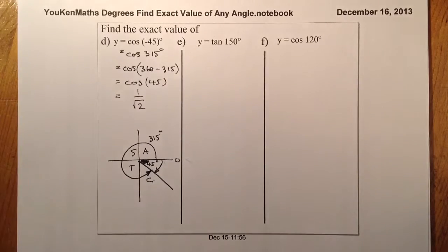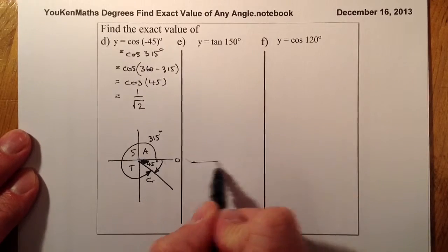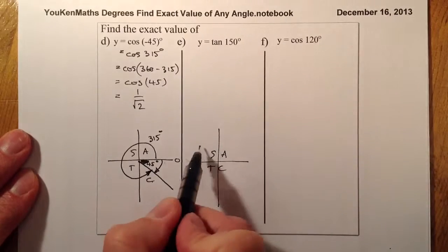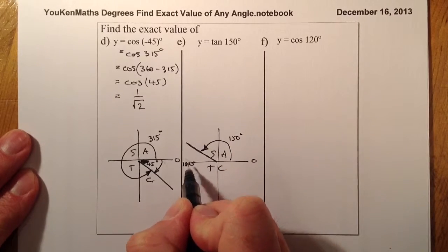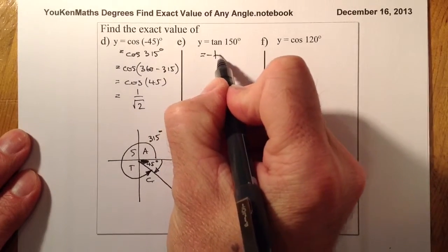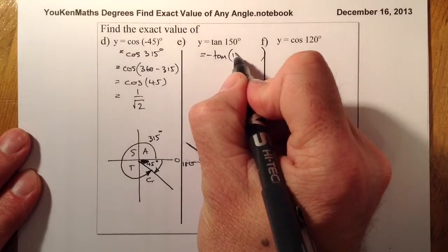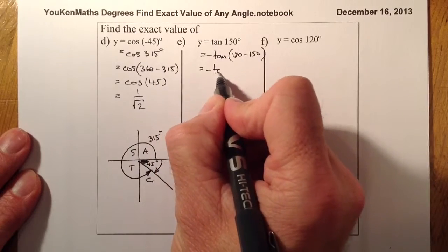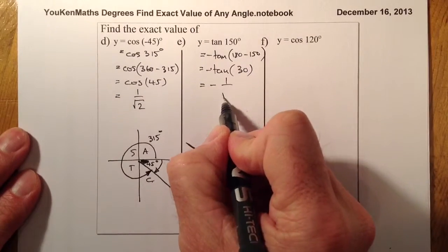Now the practice solutions. Tan 150: draw the CAST diagram. 150 degrees lies in the sine quadrant, and tan is negative there. The acute angle is 180 minus 150, giving 30 degrees. So the answer is minus tan of 30, which equals minus 1 over root 3 from the table of exact values.